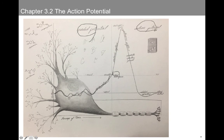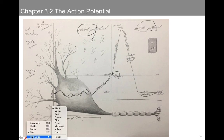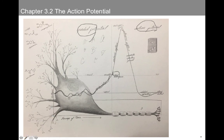Now we're going to be talking about the action potential. Instead of having a bunch of grades, we have a domino representing the fact that this is a self-propagating, unidirectional flow of energy. The action potential is not going to occur in the cell body and the dendrites. It's actually going to occur in the axon hillock and travel down the axon all the way to the axon terminals.